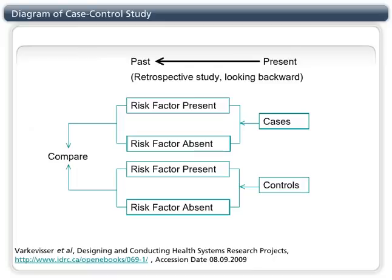Unbiased selection of cases and controls is very crucial to this design. Selection biases pose a substantial threat to the validity of study findings. There are also information biases that pose a serious threat, since the disease status is already established when past exposures are documented.